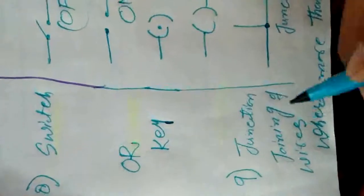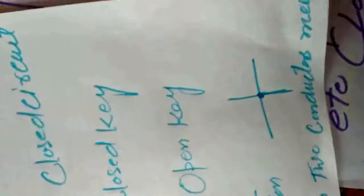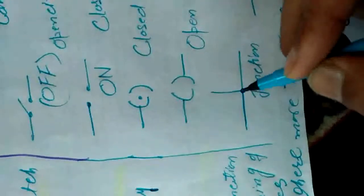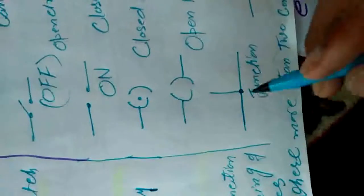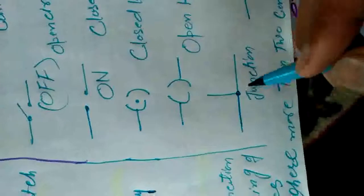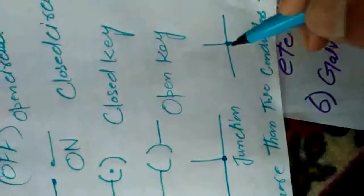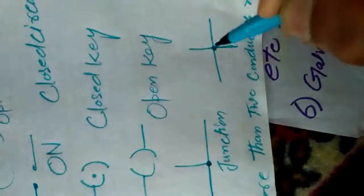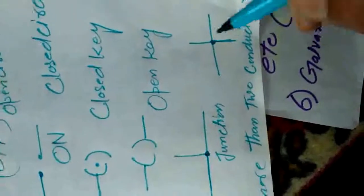The next component is the junction. A junction is the joining of wires — where more than two conductors meet. We represent a junction by a dot at the point where wires meet. For example, three conductors meeting at one point form a junction. Similarly, four conductors meeting at one point also form a junction, represented by this symbol.